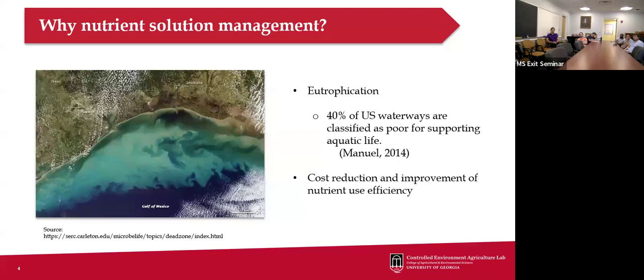The main drawback is eutrophication — as you're draining these solutions they're still relatively rich in elements like phosphorus and nitrogen, which can fuel algae blooms and lead to subsequent eutrophication. It's also not an economical way to manage your solution because you're simply dumping valuable inputs down the drain. We want to investigate other strategies that enable us to maintain solution composition over time without these negative impacts on ecosystems and wasted costs for growers.